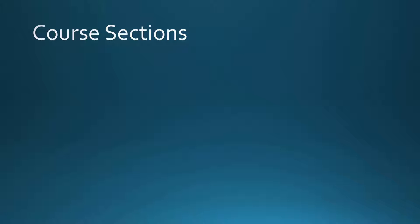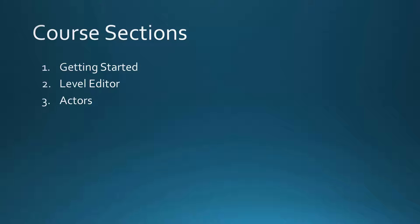Let me give you a brief outline of the course. The course is divided into nine sections. The first section, Getting Started, will help you get the engine installed and will introduce you to some basic concepts. The second section will teach you about the level editor, which is used to create the environments for your games. The third section, Actors, will teach you about the various types of entities available in Unreal to help you craft your environments and your games.